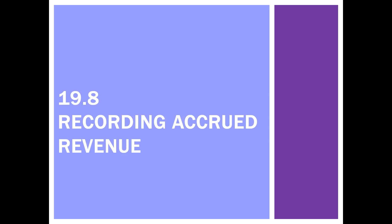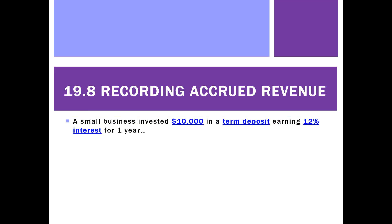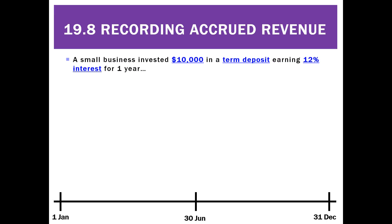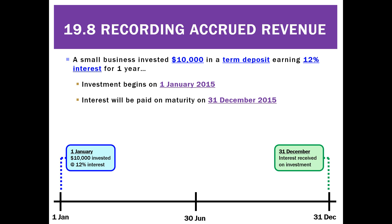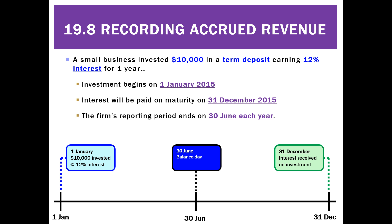How do we record accrued revenue? Let's take an example. We've invested $10,000 in a term deposit and it's going to earn 12% for a whole year. The investment occurs on the 1st of January. We're going to get the actual money, or the interest, on the 31st of December — that's called the maturity date. But our balance sheet for this business is the 30th of June, so by balance day we're going to have earned some interest but not have received it.